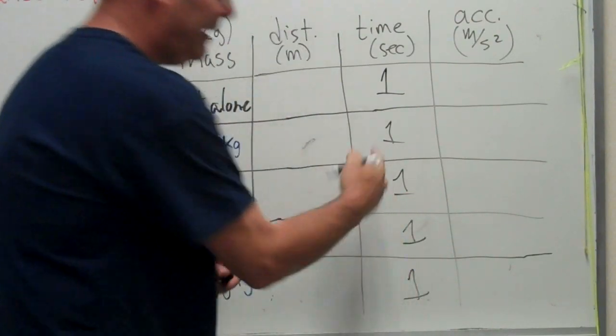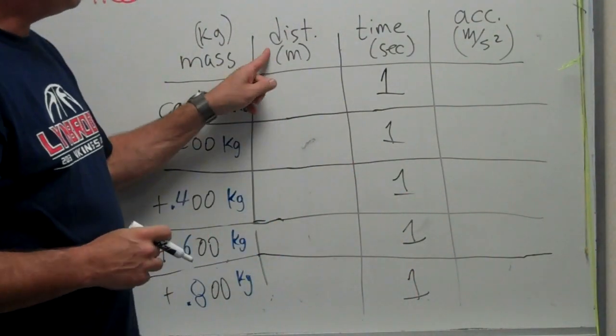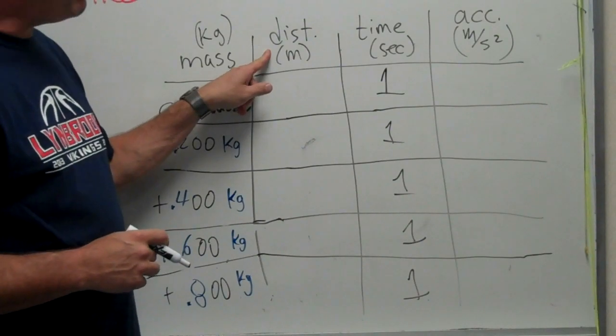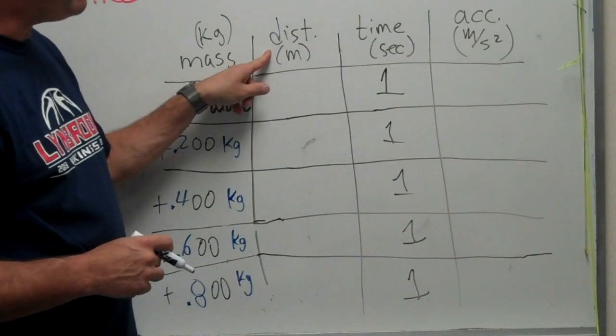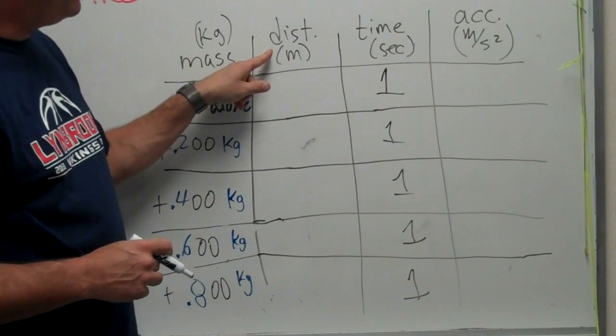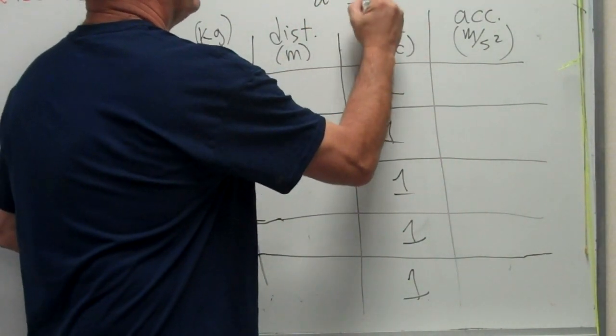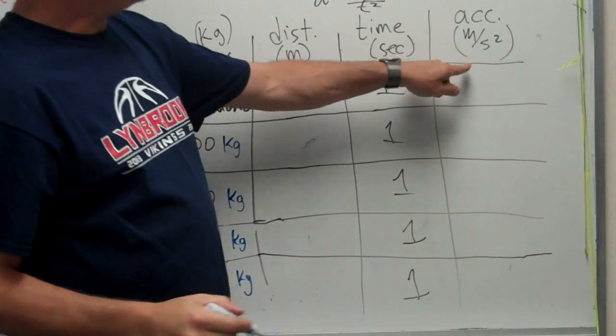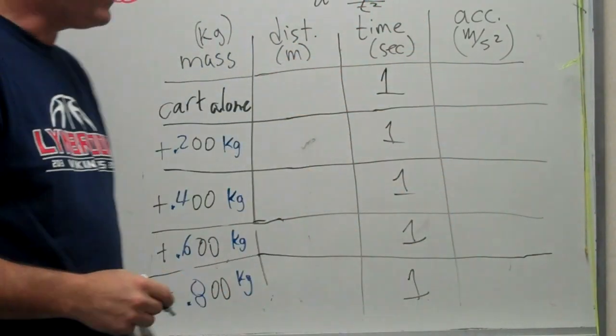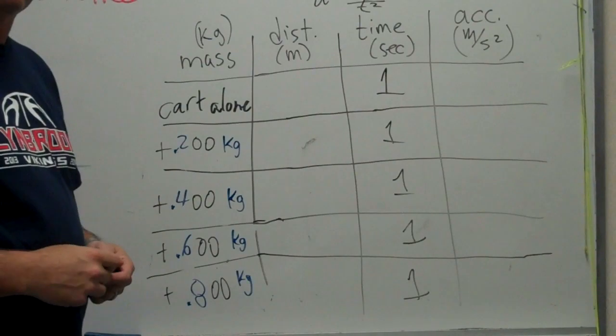Again, that's only if you measure the distance from the beginning to dot number 60 because there's 60 dots generated per second. And then using your equation, acceleration is equal to 2d over t squared. You will calculate the value for the acceleration for each of these five trials.